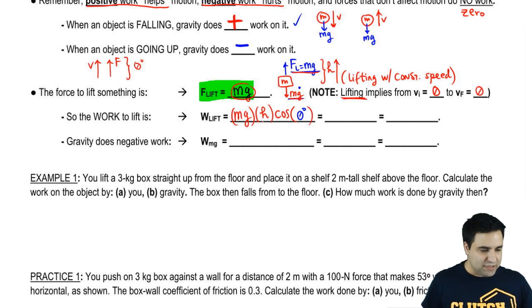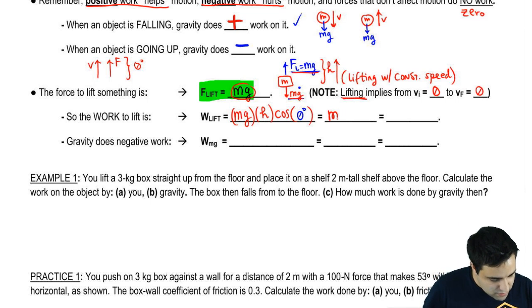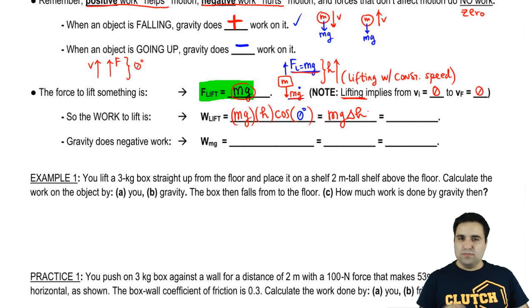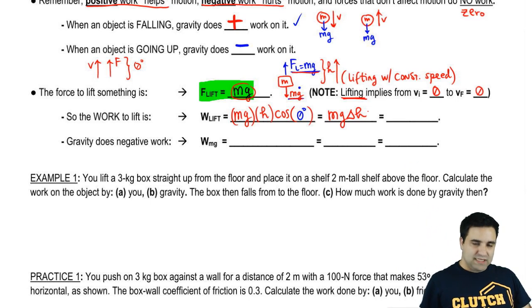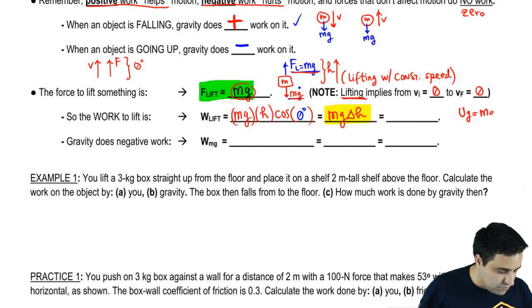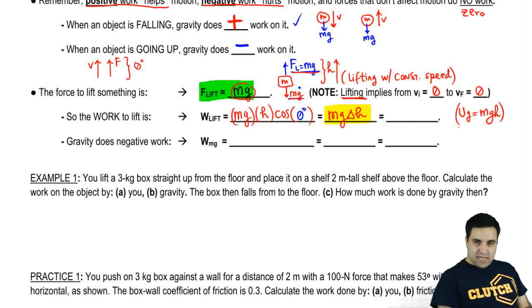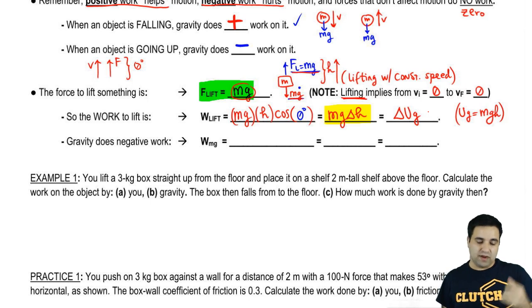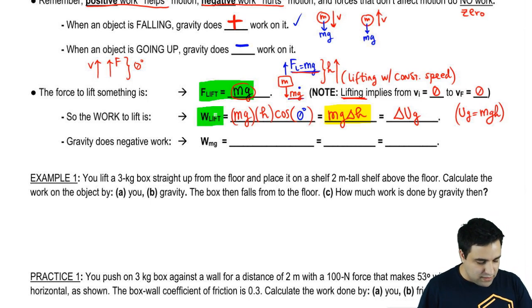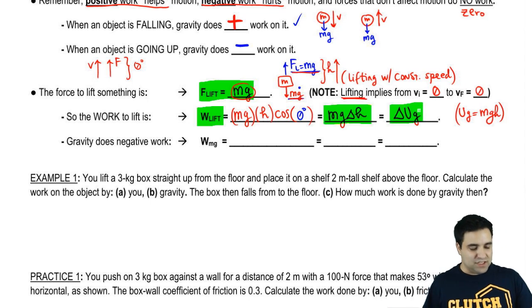So I'm going to say that the work to lift is mgh. Now, instead of calling this mg, I'm actually going to call this mg delta h, because mgh means that implies that you're starting from the ground. Well, maybe you're not starting from the ground. Maybe you're starting from two to three. So your delta h from two to three is one. So mg delta h. I hope that you remember mgh. Mgh was your potential energy. Gravitational potential energy is mgh. So mg delta h is basically your change in gravitational potential energy. Change in gravitational potential energy. So long story short, work lift is this. That's how you're going to calculate it. But sort of conceptually, it's the change in potential energy.